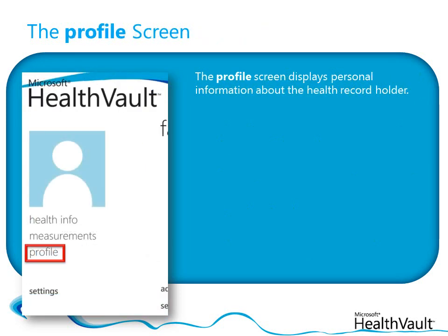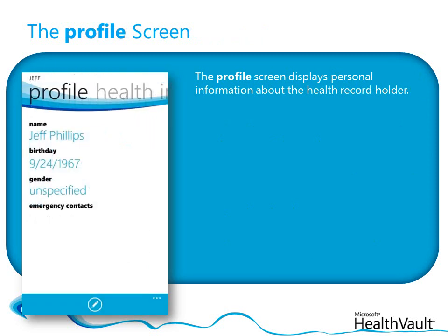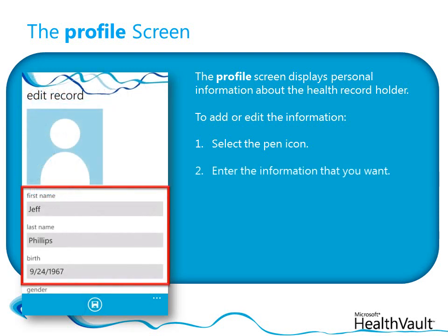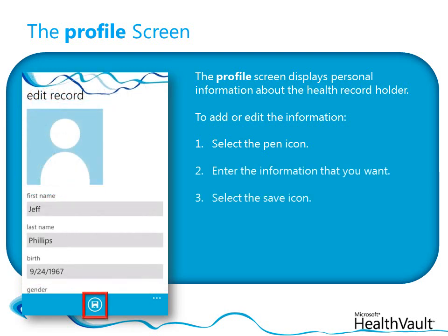The Profile screen displays basic information about the owner of the health record, such as their name, gender, birth date, and their emergency contact. To add or change this information, select the pen icon at the bottom of the screen, enter the information that you want, and then select the save icon.